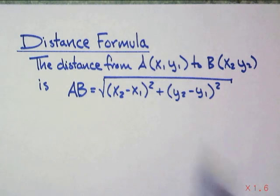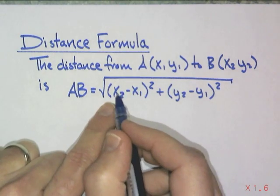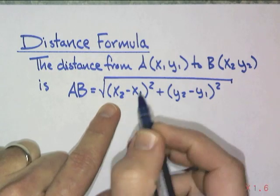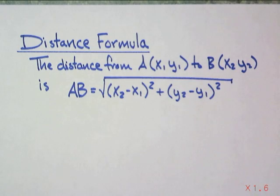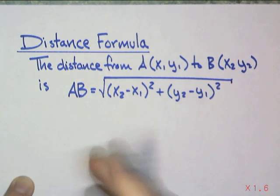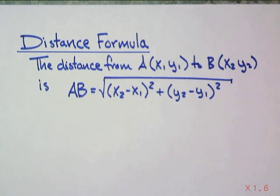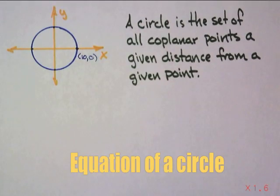And remember, it doesn't matter if this turns out to be negative because we're just going to square it. If it turns out that the difference is a negative 5, negative 5 squared is going to be 25. So, we'll do some more of those and you will have no problem figuring out the distance.